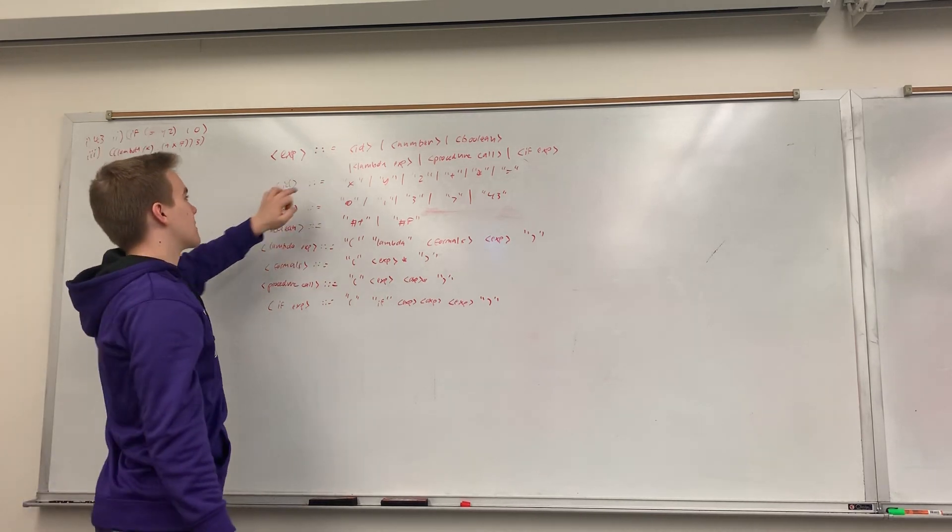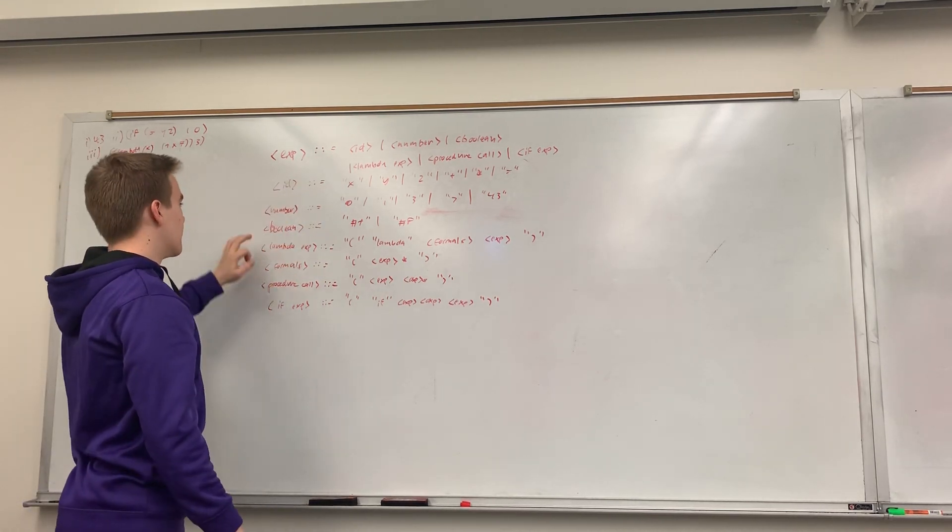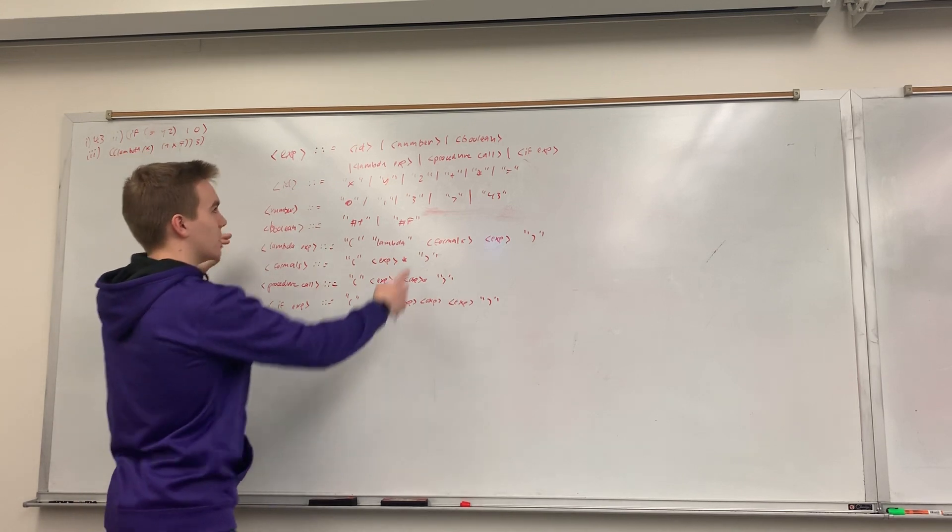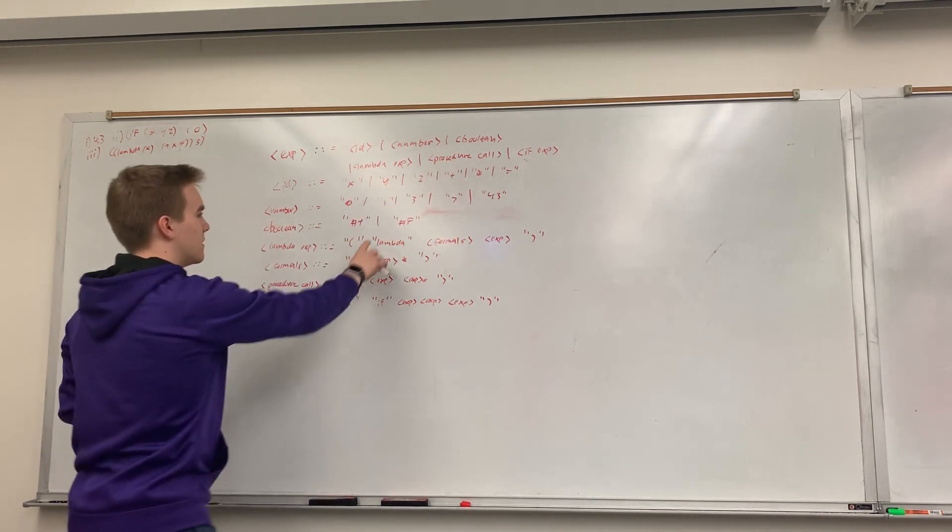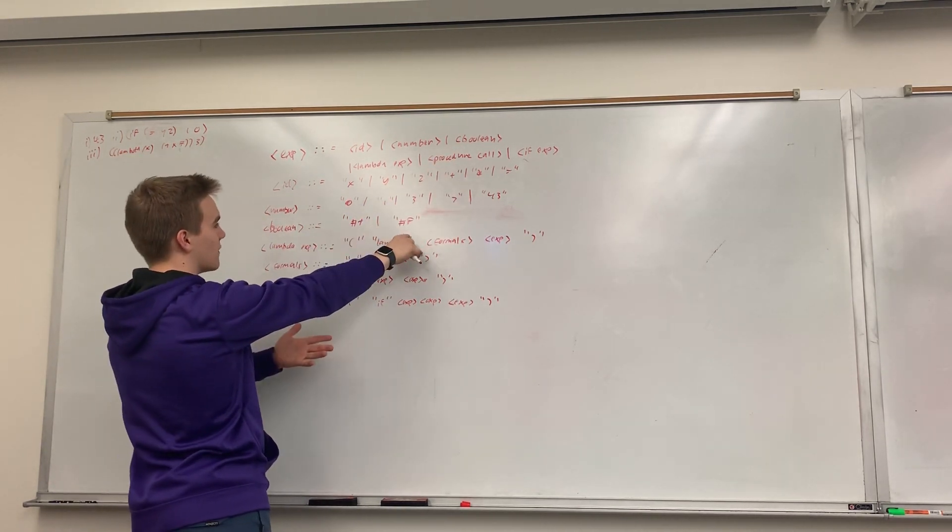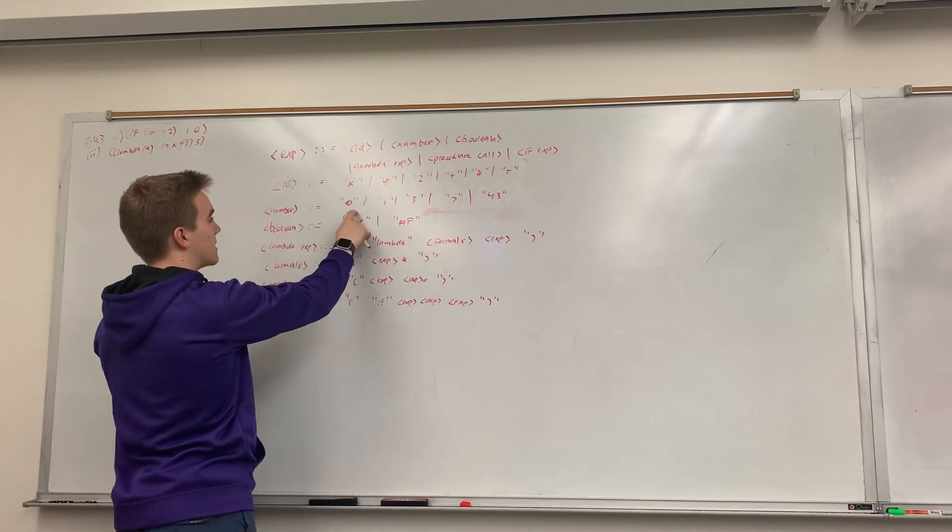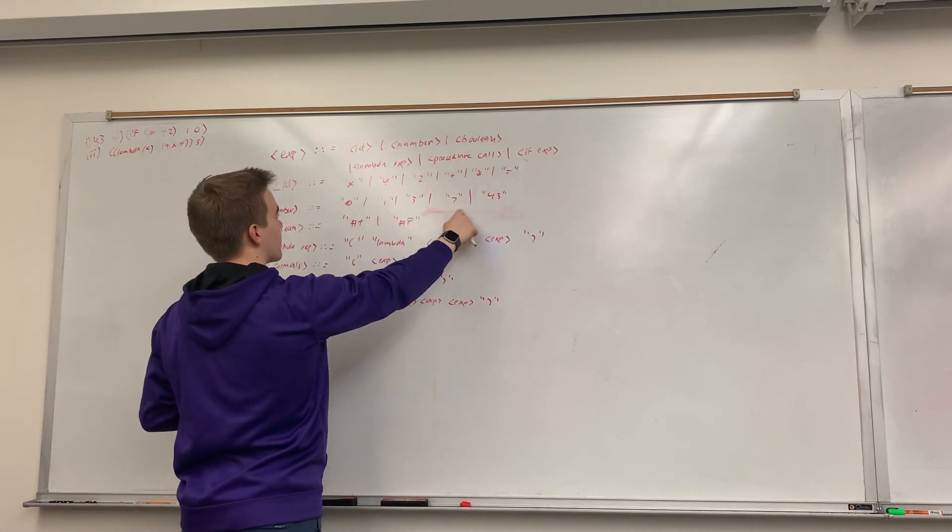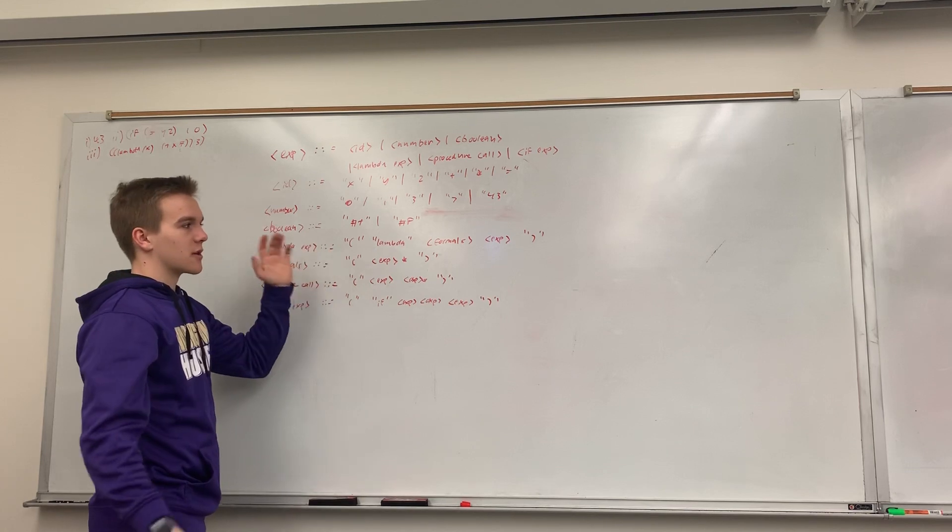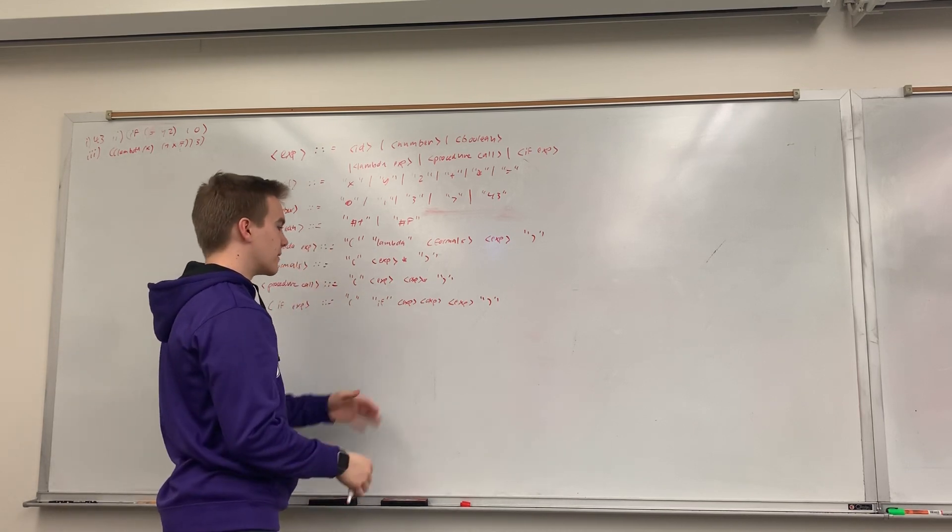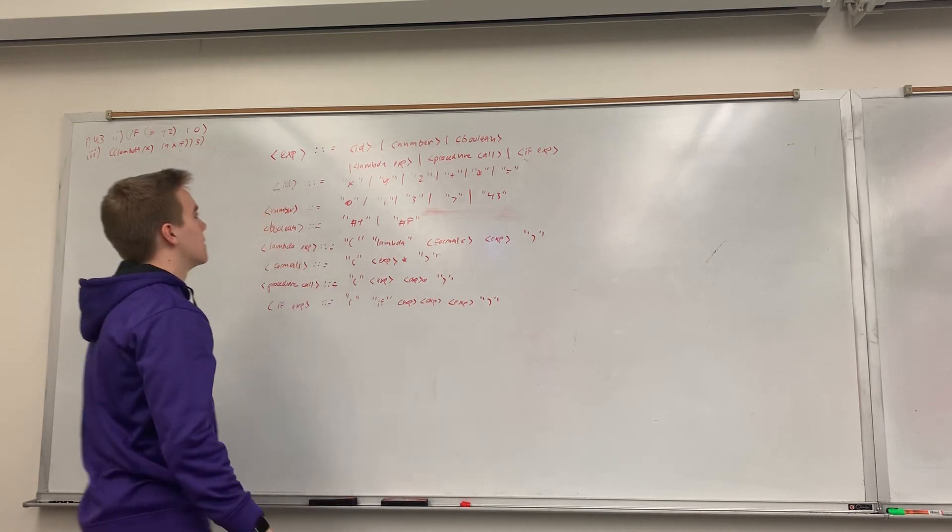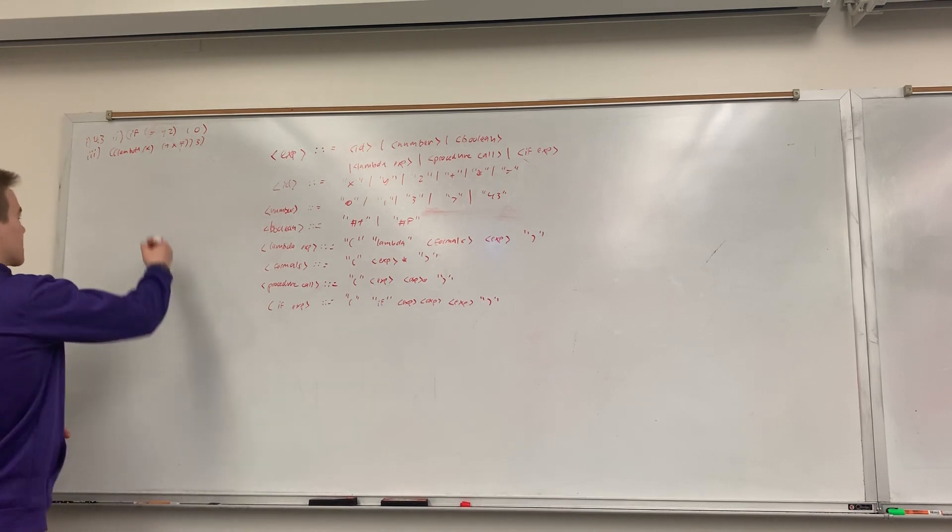So, id would get replaced by some id and boolean. Over here, we get replaced by some boolean. These are ors, so it's like this could be a true or a false. And this number could be a 0 or a 1 or a 2 or a 3 or a 7 or a 43. These quotation marks are just to show that it's a literal thing, like not something that gets replaced. And let's just get into the problem.